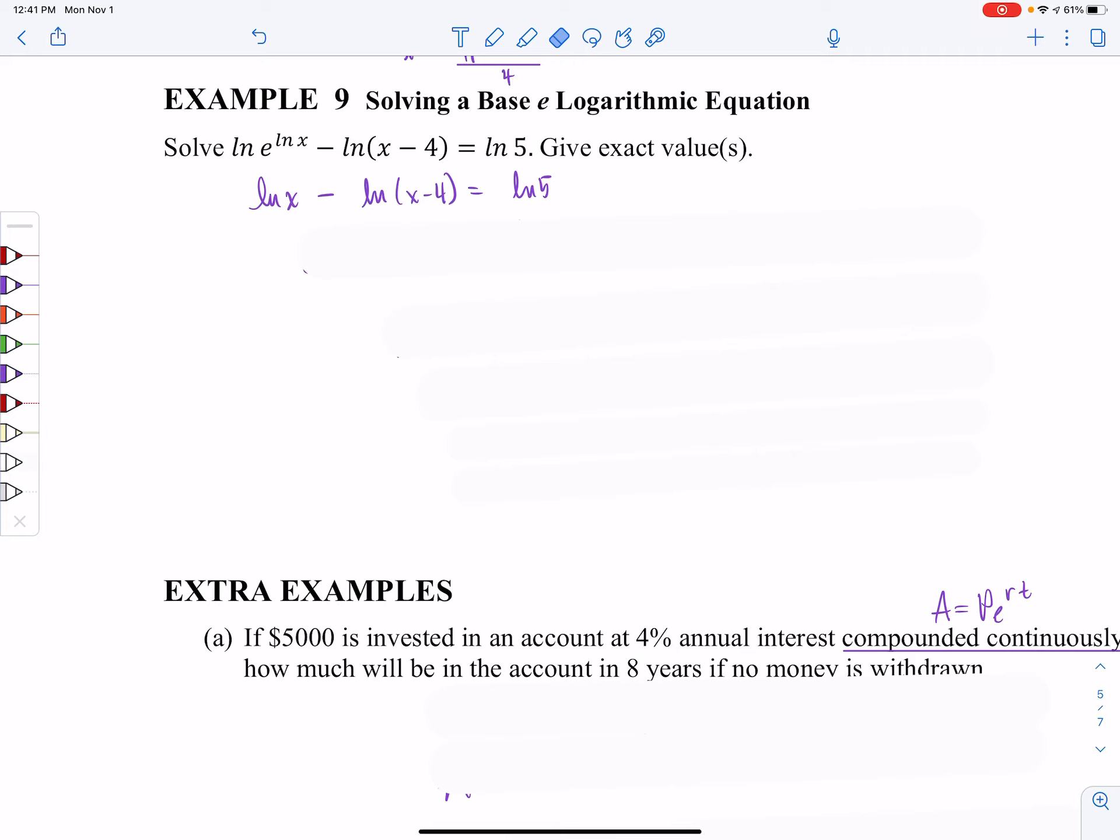So this is just going to be my power left over, natural log of X. That's not magic. I just used a property. And that's the only thing I did in that line is to use that property on the first term. Well, now what I'm going to do is these two can be considered the quotient rule. So I'll have a single natural log of X over X minus 4 is equal to the natural log of 5.